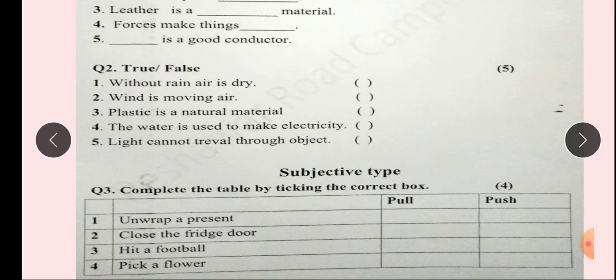Number 5: Light cannot travel through objects. Next is your subjective part.